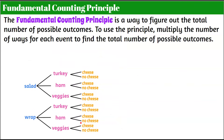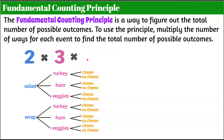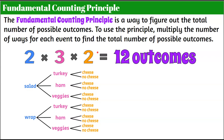Now there's another way to find the possible outcomes, and sometimes it's not realistic to make a tree diagram. The fundamental counting principle is a way to figure out the total number of possible outcomes. To use the principle, you multiply the number of ways for each event to find the total possible outcomes. Our first event — pick salad or wrap — had two outcomes. Our second event had three outcomes: turkey, ham, or veggies. Our last event was to pick cheese or no cheese — two choices. Two multiplied by three is six; six multiplied by two is 12, which matches what we counted in our tree diagram.